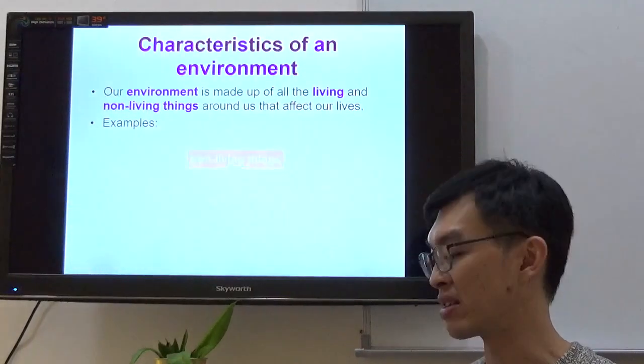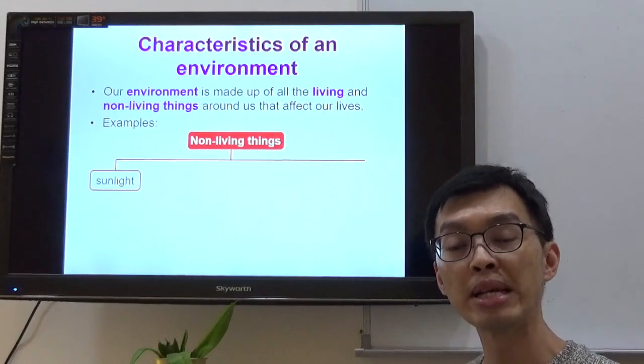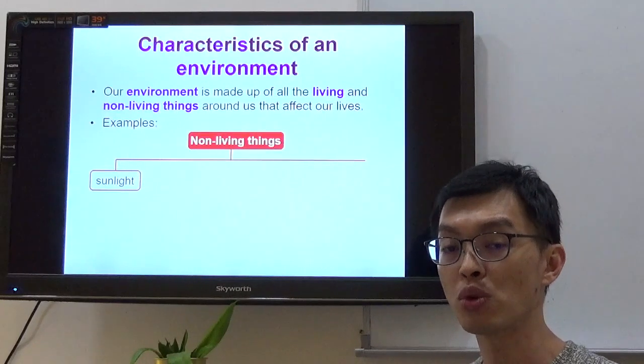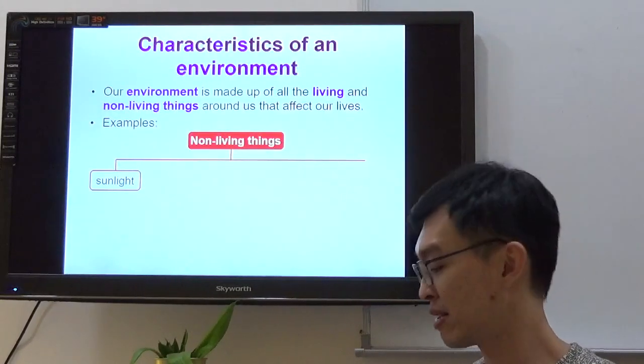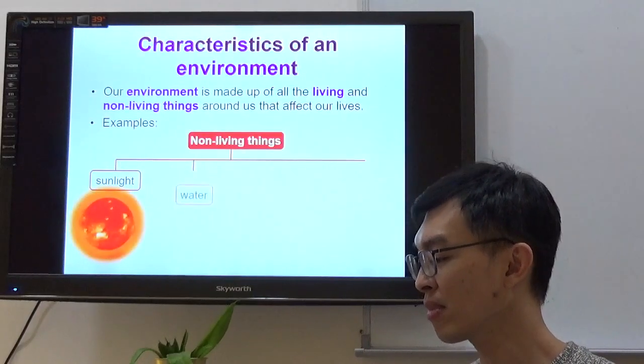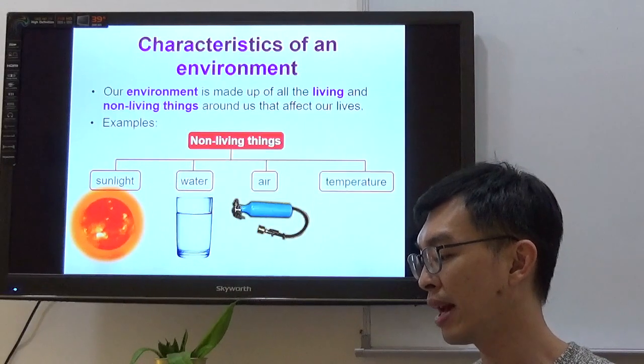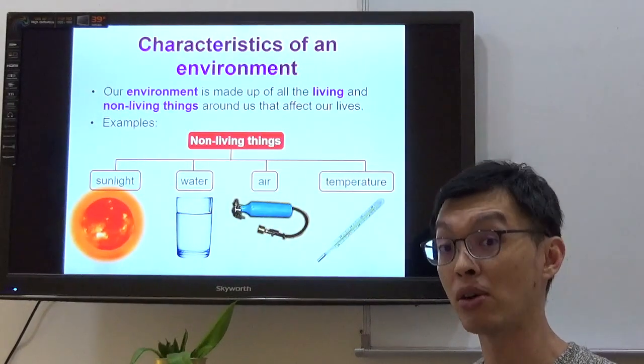Let's talk about non-living things. Sunlight. Sunlight is our main source of light and heat energy, so definitely it is also one of the characteristics that do affect the environment. Water, air, and temperature. We'll be spending more time to talk about them later on.